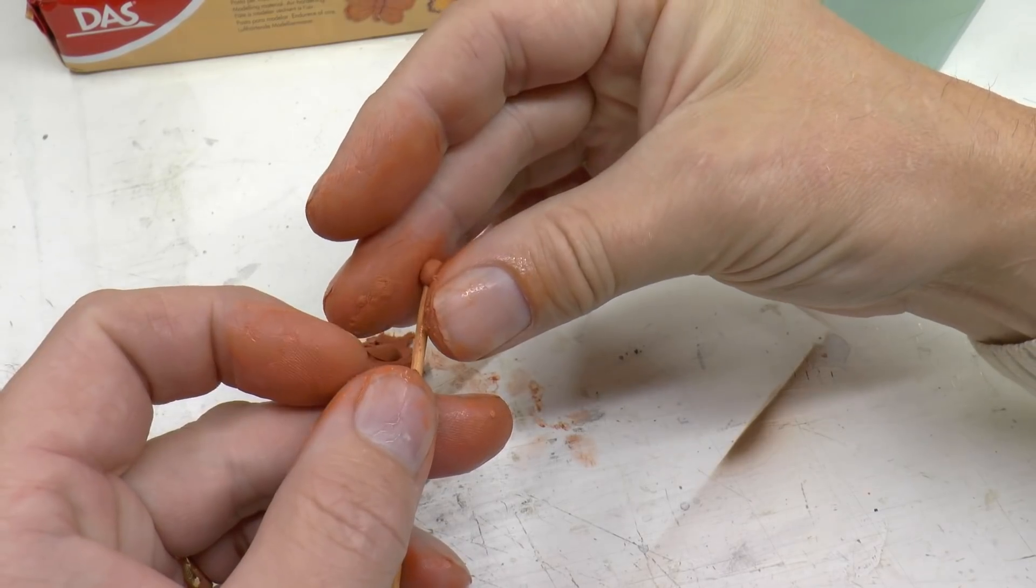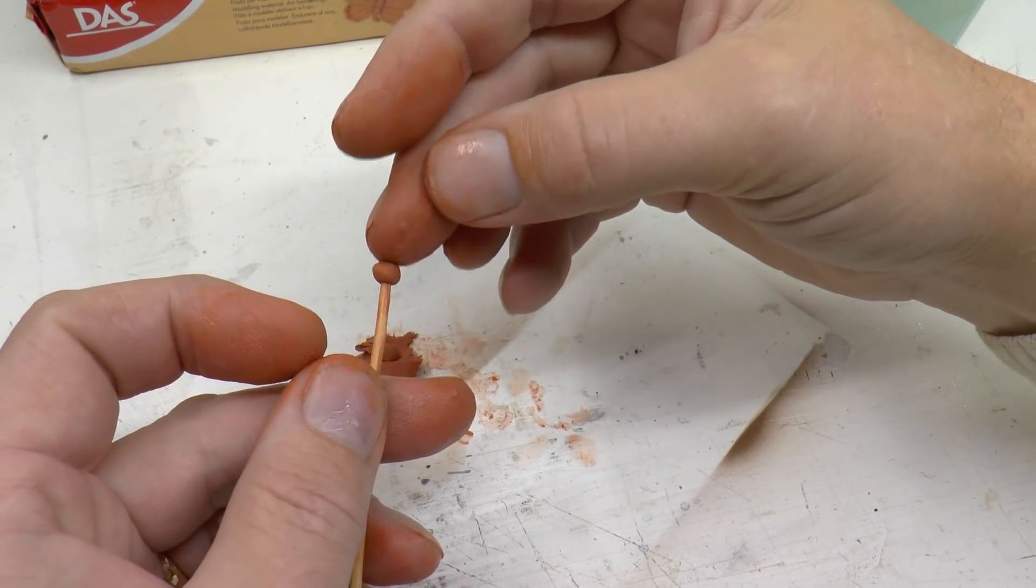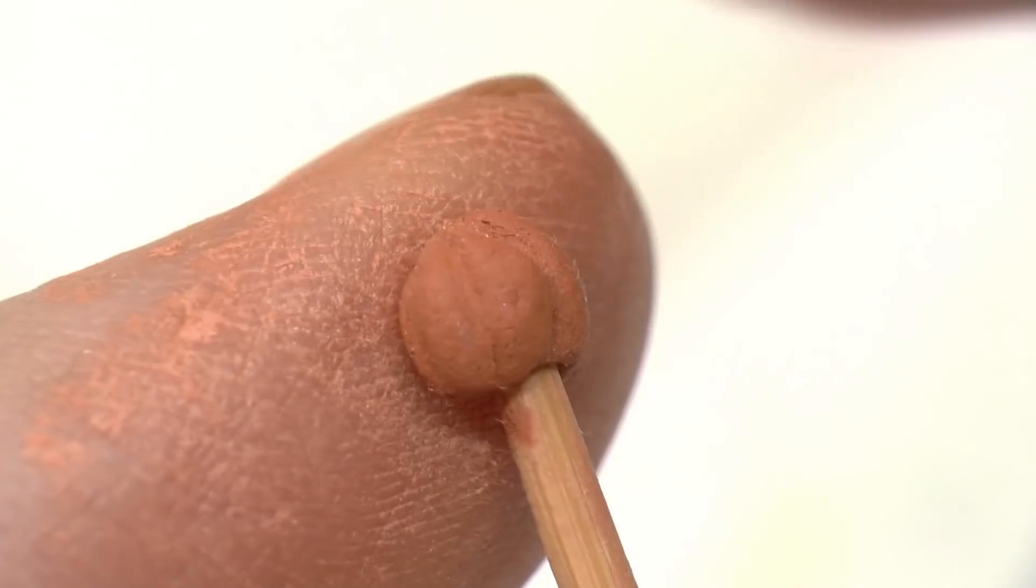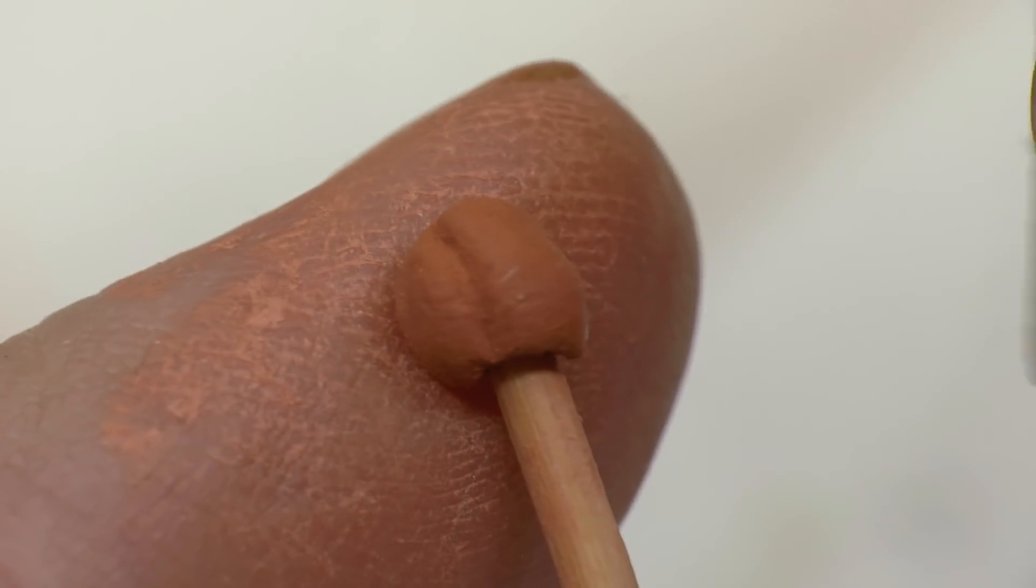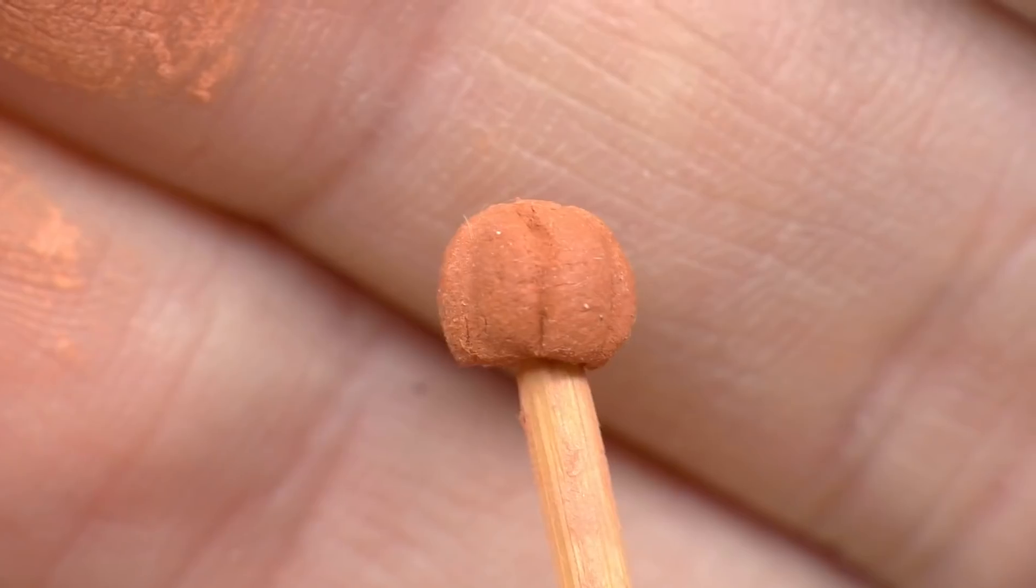And I use a barbecue stick. So I form a ball from the clay. I use a match to give the pumpkin its characteristic shape. Here it goes. So this one is finished.